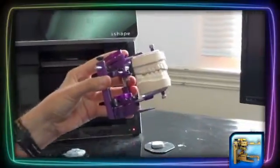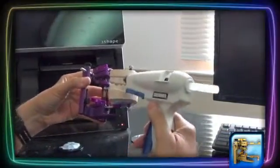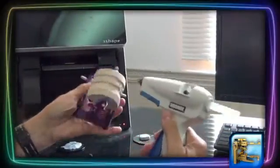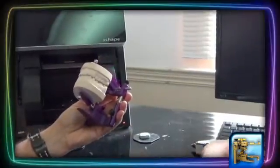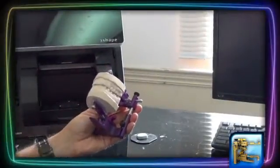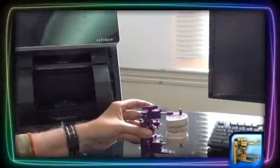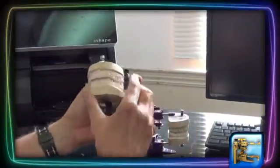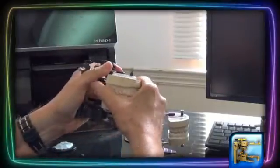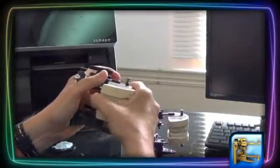After it's articulated, take the glue gun and tack the models together, both front and sides. As soon as it cools, slide the model off the articulator.